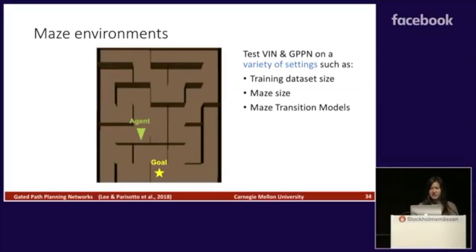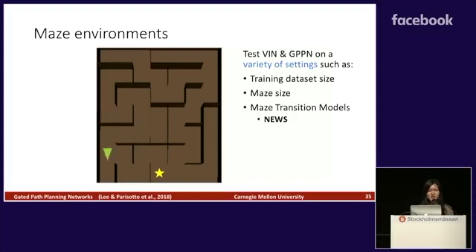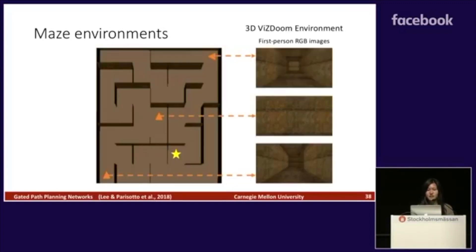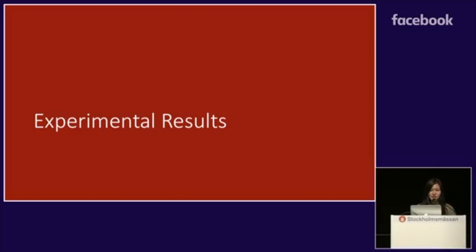We tested the models on maze environments using a variety of settings, such as training dataset size, maze size, and maze transition models. In the NEWS transition model, the agent can move one cell north, east, west, or south. In Moore, the agent can move to any of the eight neighboring cells. In differential drive, the agent can move forward along its current orientation, or turn left or turn right. We also did experiments in the 3D ViZDoom environment, where the agent has to learn path planning from first-person RGB images. In the interest of time, I will give a brief overview of the experimental results, but for full details, come check out our poster.